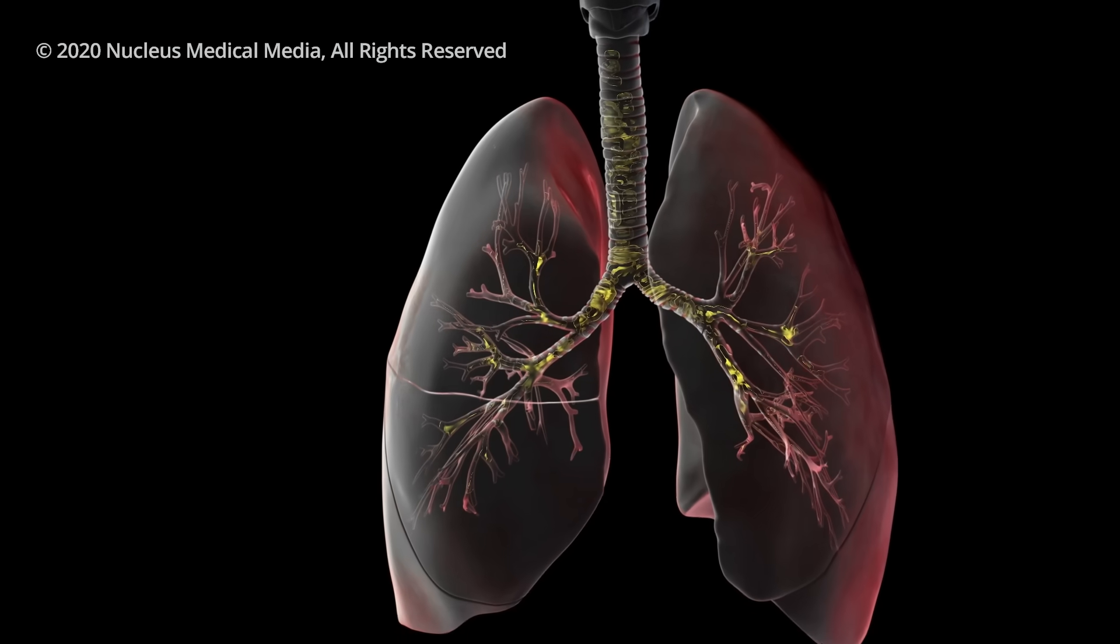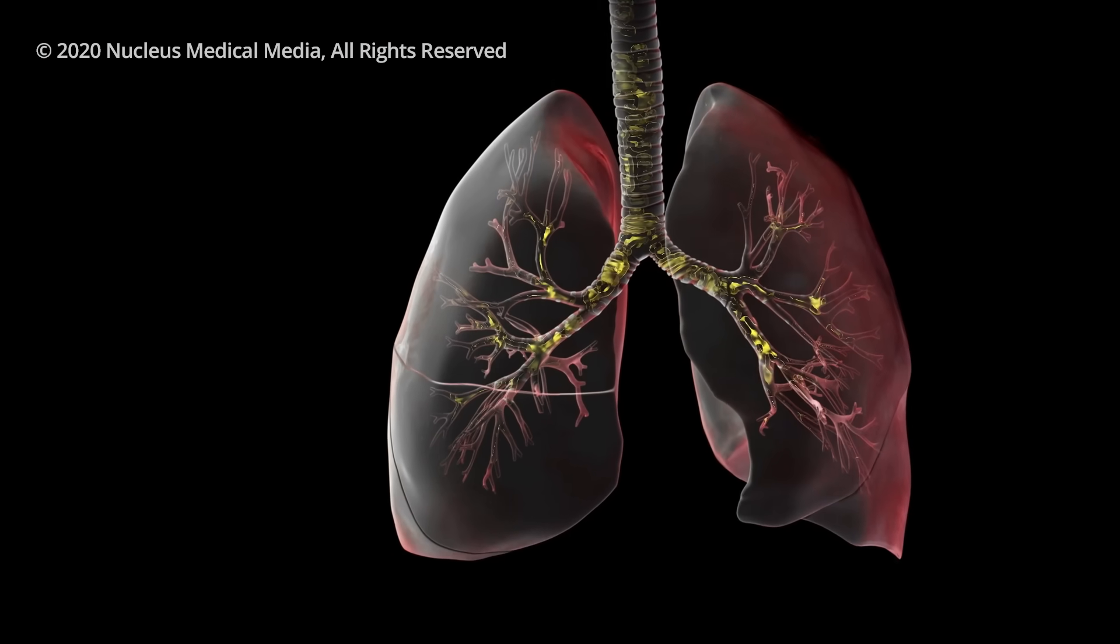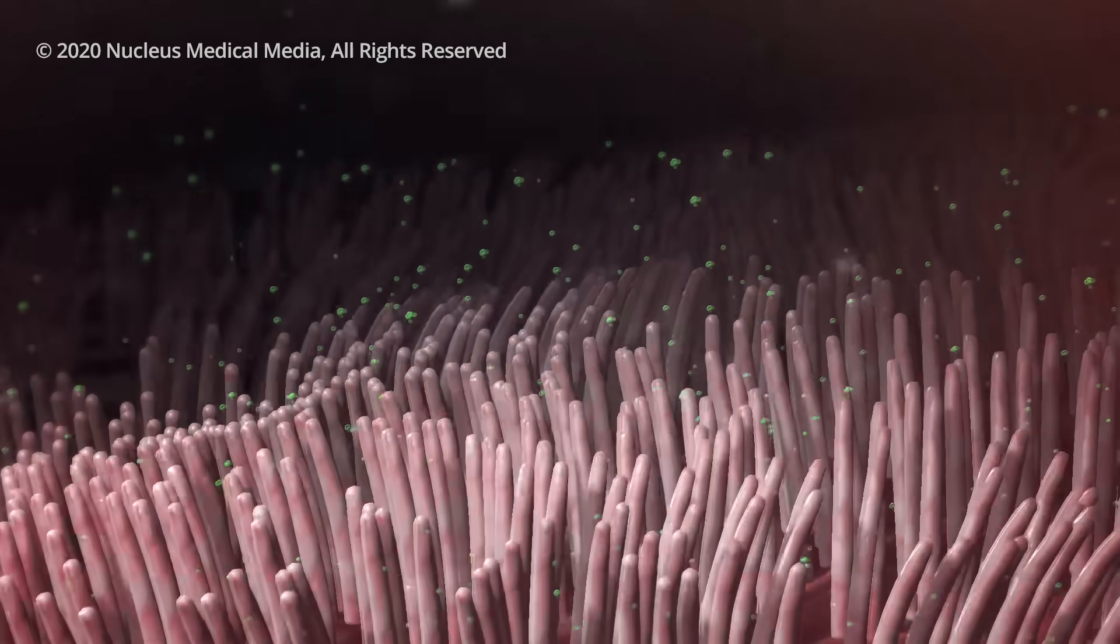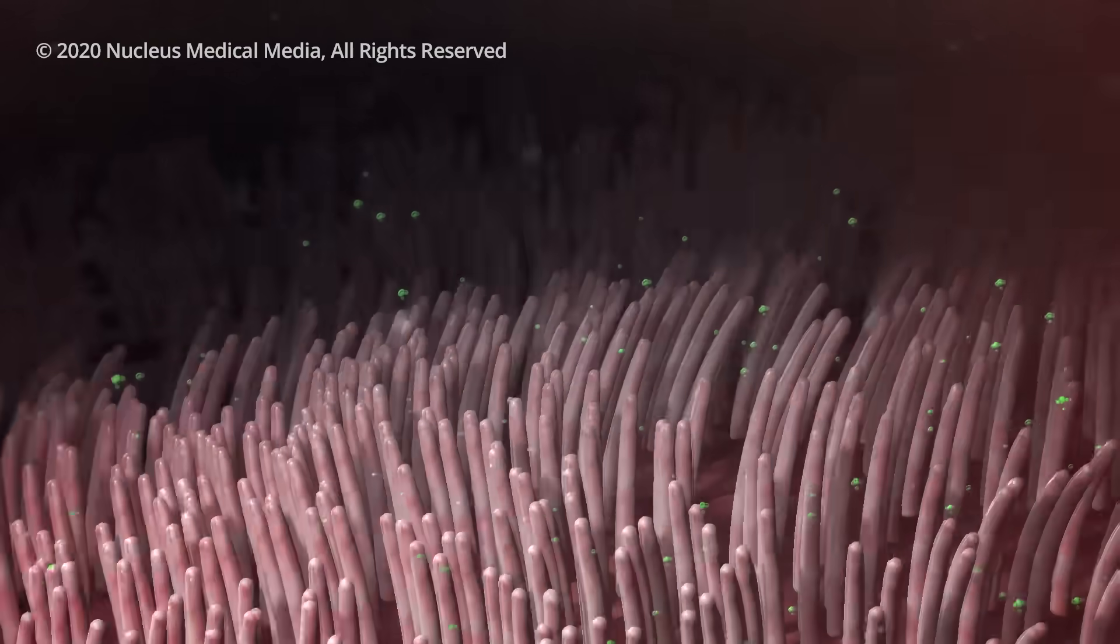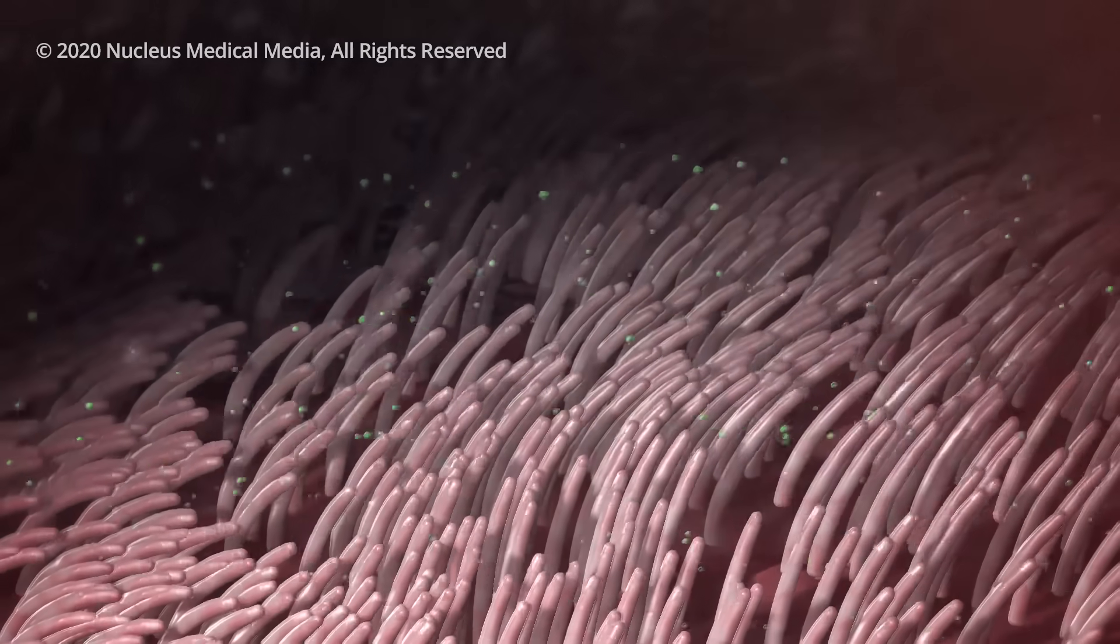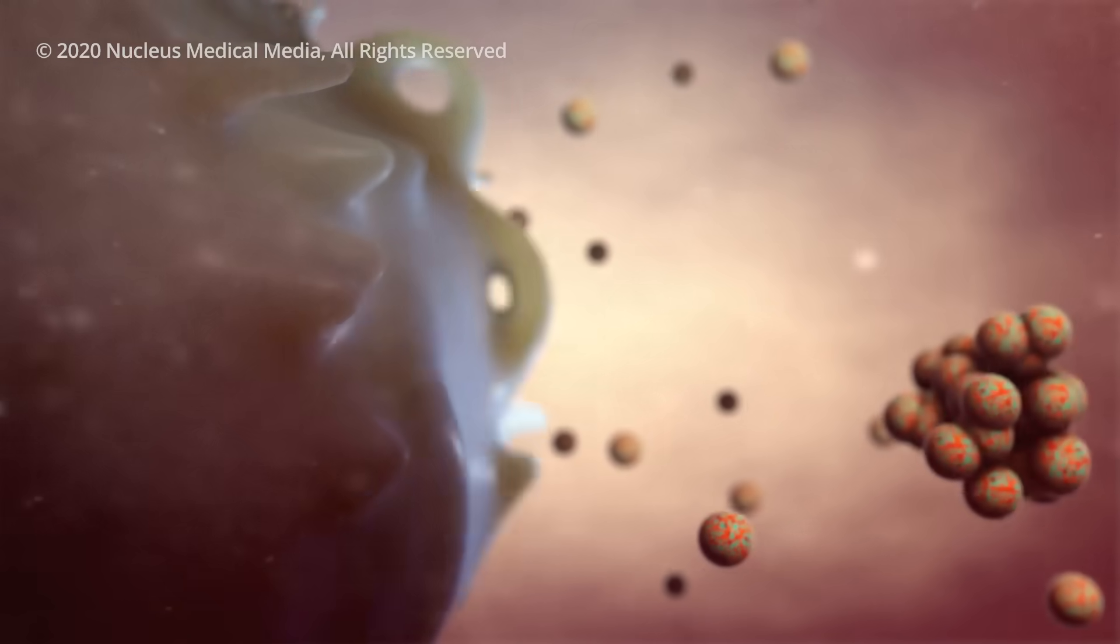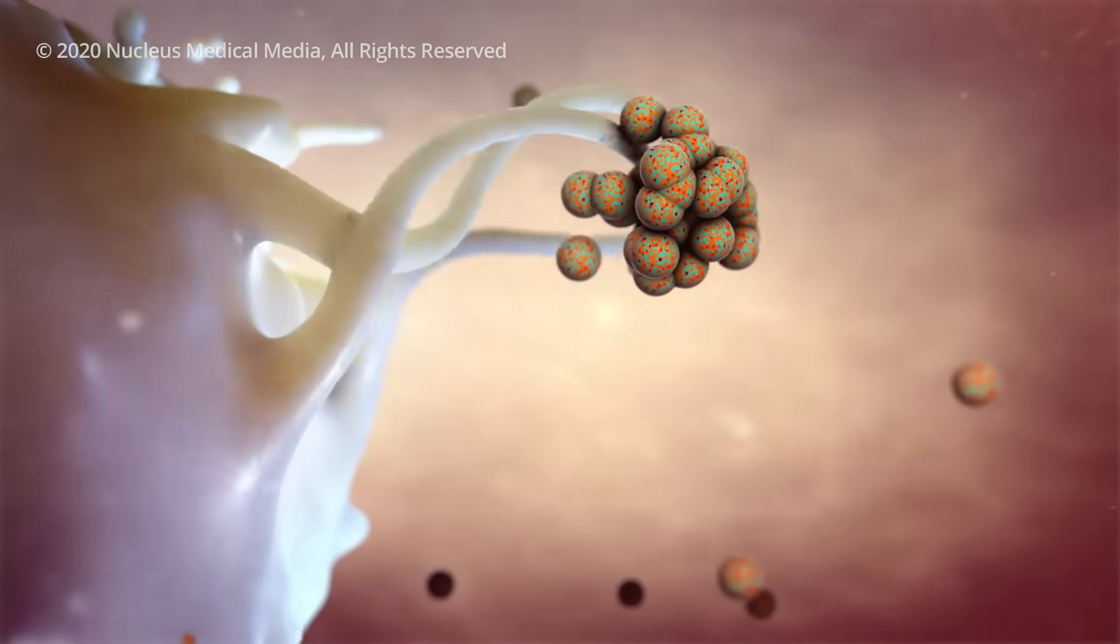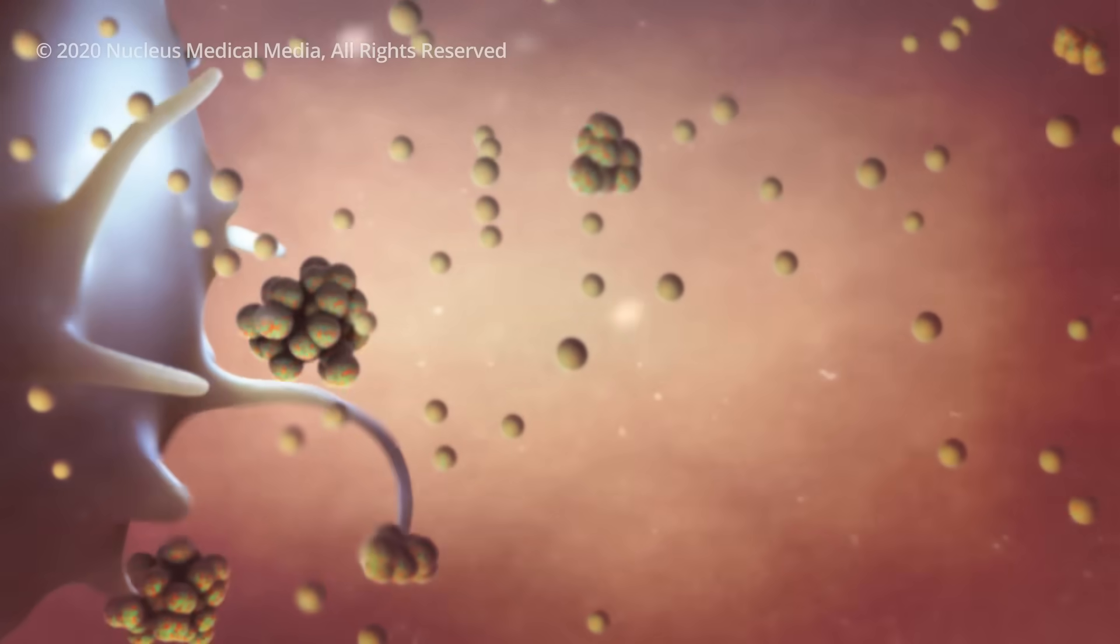Your airways catch most germs in the mucus that lines your trachea, bronchi, and bronchioles. In a healthy body, hair-like cilia lining the tubes constantly push the mucus and germs out of your airways, where you might expel them by coughing. Normally, cells of your immune system attack viruses and germs that make it past your mucus and cilia and enter your alveoli.